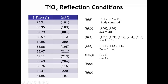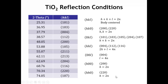We see only one 00L peak, the 0-0-4, meaning the 001, 002, and 003 are all missing. The reflection condition here is L equal to 4N. For the H00 peaks, we see only the 2-0-0, and the 1-0-0 is definitely missing, so the reflection condition is H equal to 2N. For the HH0 peaks, we have only the 2-2-0, so that's also H equal to 2N — we don't see the 1-1-0.